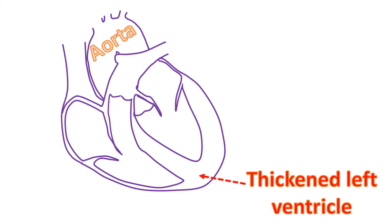When the blood pressure in the initial part of the aorta is high, it causes resistance to the pumping of the left ventricle, which pumps blood to the aorta. The left ventricle is the lower left chamber of the heart. In order to overcome the resistance, the left ventricular muscle gets thickened. Though it is successful in the beginning, in the long run the left ventricle may fail, leading to heart failure symptoms.